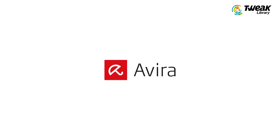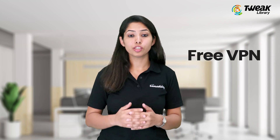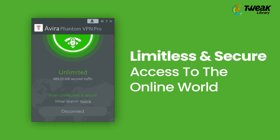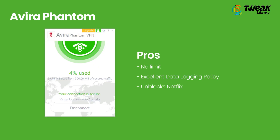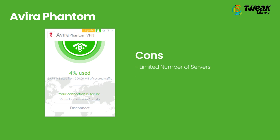Next is Avira Phantom. It's quite a decent and free VPN that offers limitless and secure access to the online world. It ensures your identity is completely protected when you surf the internet, and no limit has been put on simultaneous device connections. It has an excellent data logging policy and supports unblocking of Netflix. On the downside, it has a limited number of servers and limited country locations compared to its competitors, and the speed test scores have not been so great.